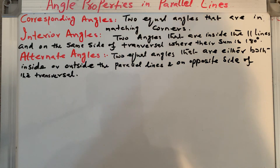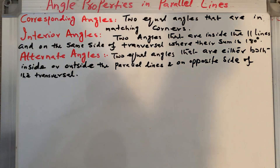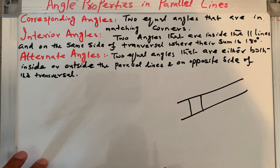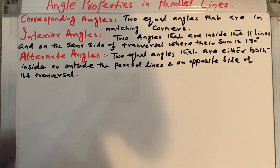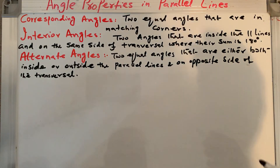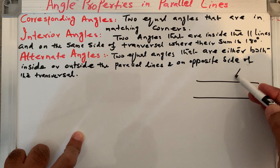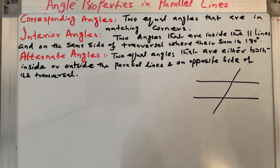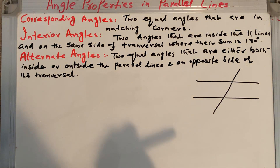Bismillahirrahmanirrahim. Welcome to my channel, Learn Math with Sayyad Ali. Today we will be continuing our topic: angle properties in parallel lines. Parallel lines are lines which never meet each other and their distance is always constant. When we have parallel lines, there are some angles formed between them if any transversal line crosses them.